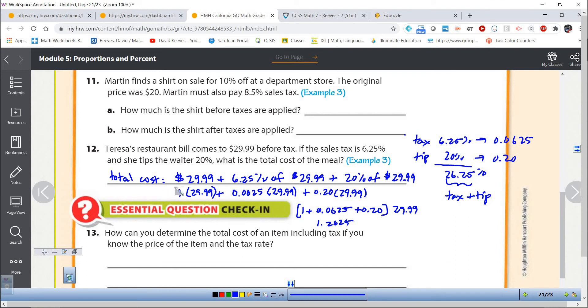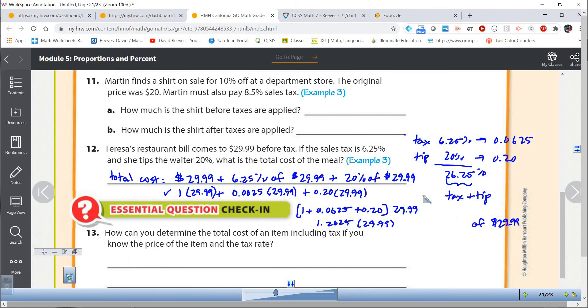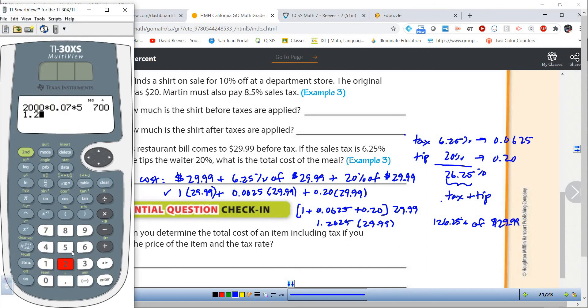And what do I get? I get 1.2625 because if you think about it, what do we get here when we add those together? We get 26.25% because that's really the interest you're paying. You're paying 6.25% in taxes. This is tax and this is tip. So this right here is tax plus tip. So we can do it all separately, or if you want to save yourself some time, add all of those percentages together. 100% plus 6.25% plus 20%, that's 126.25% of $29.99.